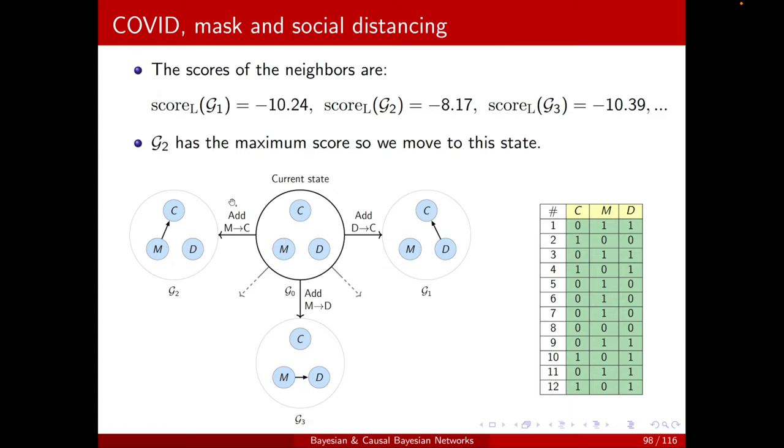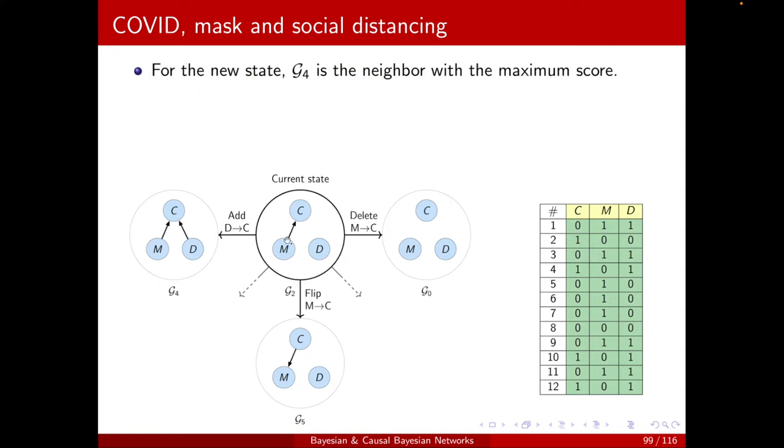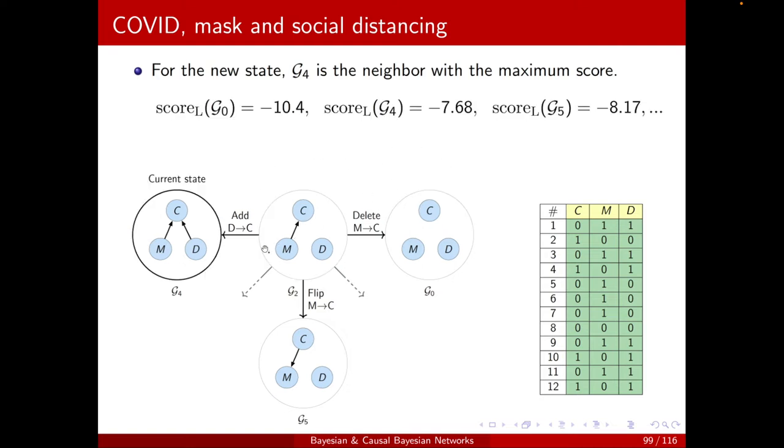Recall, it's a likelihood score. Adding edges will not make it worse. So G2 is the better neighbor. Then I will move to G2, and that will be my new current state. Now, from G2, if I delete MC, I will get back to G0. If I flip MC, I will get to another neighbor. If I add DC, I will get to this neighbor, G4, and so on. Again, I will calculate the likelihood scores. Here we see that G4 is the maximum. So this is the new current state. I will move there. And now I will calculate which of my new neighbors are the maximum.